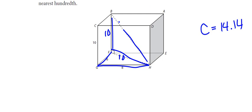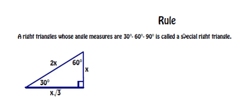Now we're going to move into talking about special right triangles. There are two types of special right triangles, and they appear pretty frequently on the SAT and in other contexts. Special right triangles have specific ratios between the side lengths that are easy to use whenever one of these figures is presented. The first one we're going to talk about is called a 30-60-90 triangle.